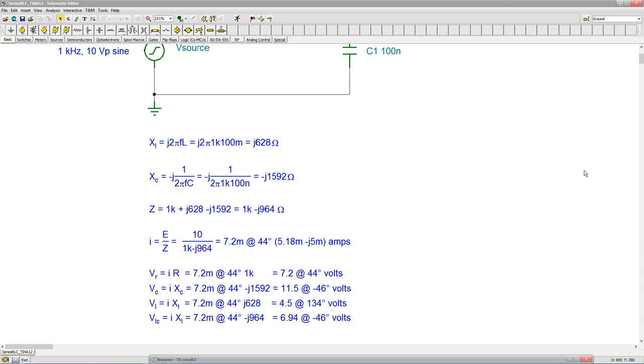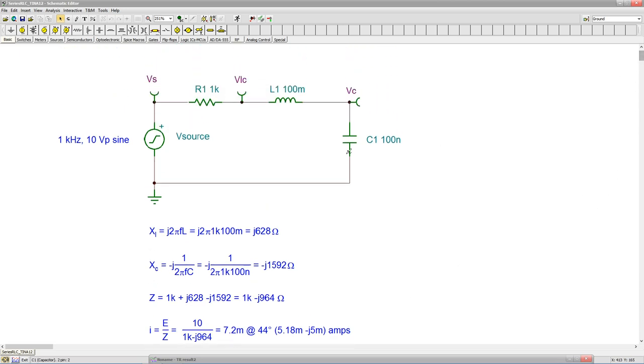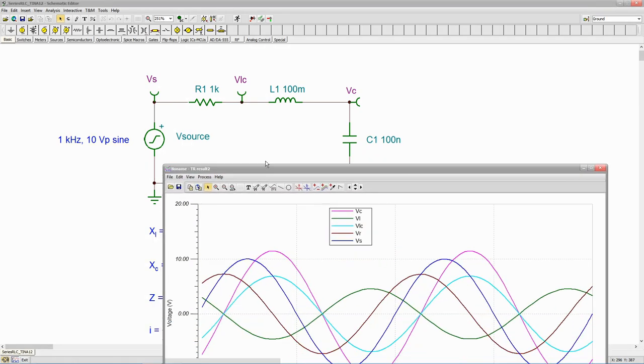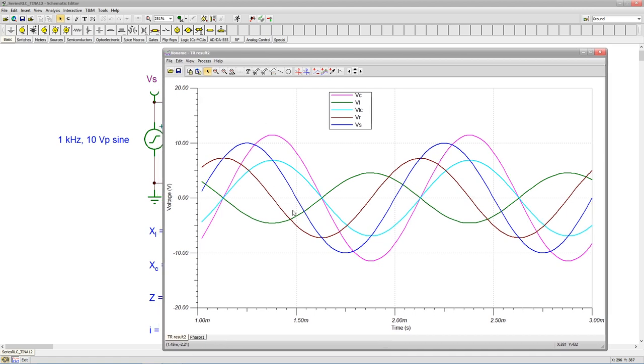So let's take a look at the transient analysis. I've already performed transient analysis. So we have Vs, Vlc, and Vc. And then I've defined, in the post processor, a value called Vr, which is Vs minus Vlc, and a value Vl, which is Vlc minus Vc. And here we go. Kind of busy. There's a lot of stuff here.